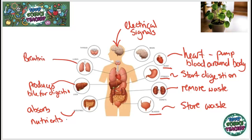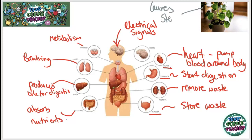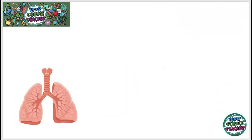The lungs are incredibly important for breathing — we'll look at those in more detail shortly. The thyroid controls your metabolism, basically how quickly you digest food. It's really important to remember that plants have organs too. Examples of plant organs include the leaves, which absorb sunlight; the stem, which holds the plant up and keeps it rigid; and the roots, which absorb water and minerals from the soil.